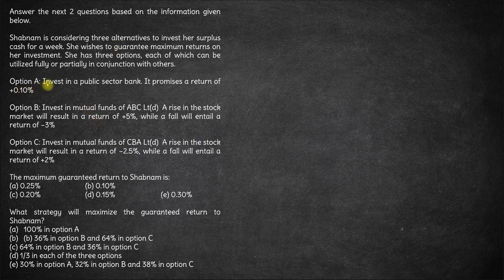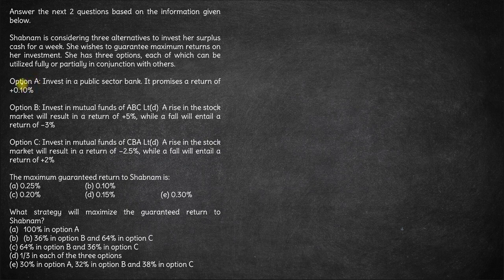Option A is to invest in a public sector bank — it promises a return of 0.1%. This is a fixed return of 0.1%. Whatever happens, whether the market goes up or down, you will definitely get a return of 0.1% here.